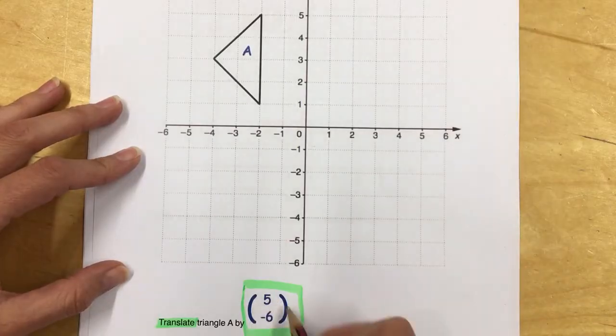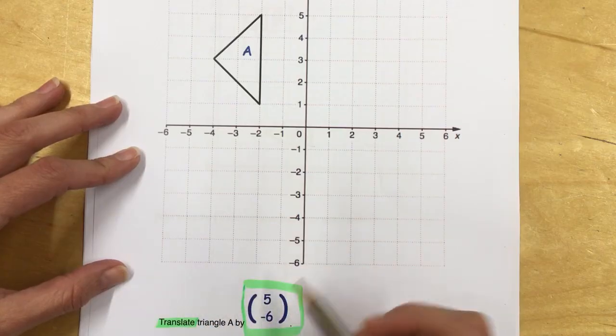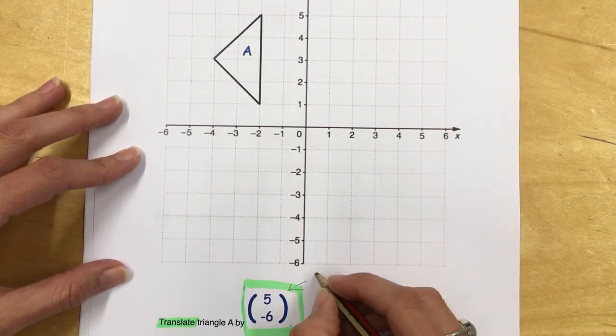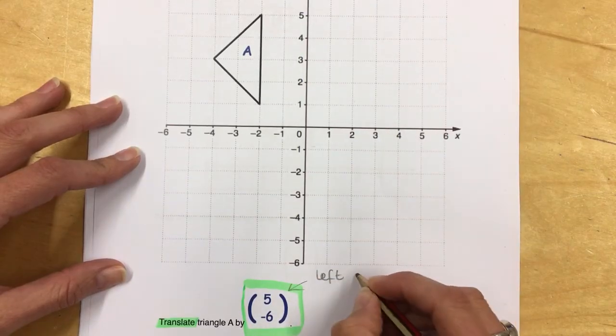We have a vector to translate the shape. The top number in the vector describes whether it's going to move left or right.